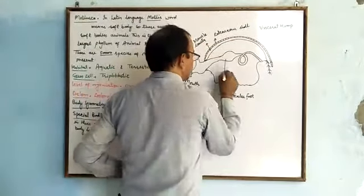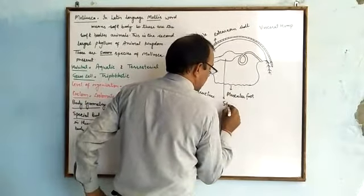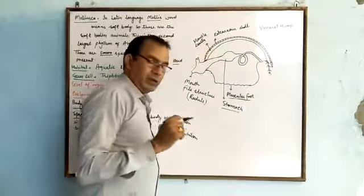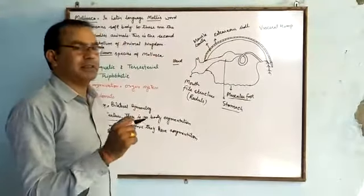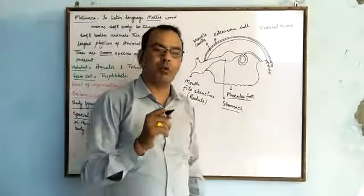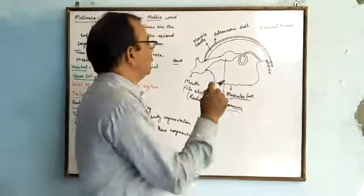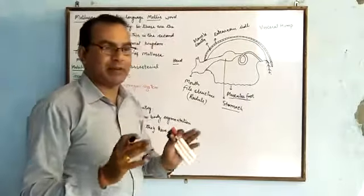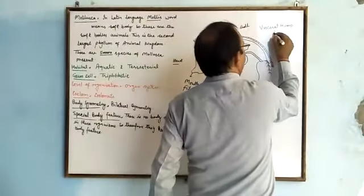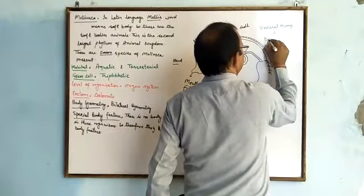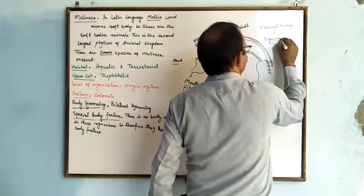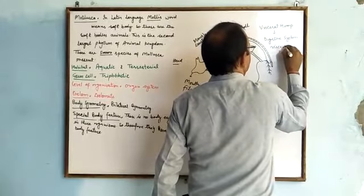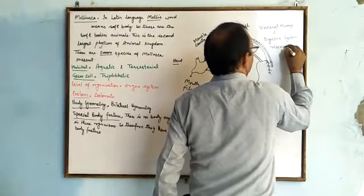Visceral hump contains the digestive system and visceral organs. Muscular foot helps the Mollusca move from one place to another.